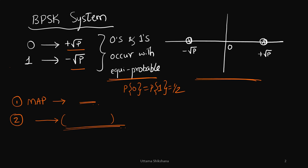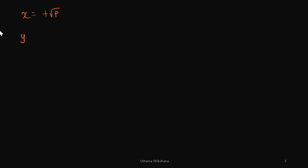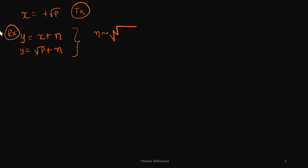Let's get into the solution. Let's say I transmit x equals plus square root of P. What would I receive? y equals x plus n, where n is noise. So y equals square root of P plus noise. For this, we need the statistics of the noise: noise is an i.i.d. Gaussian random variable with mean 0 and variance sigma squared.